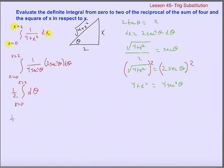We have one half times the definite integral from x equals 0 to x equals 2. Everything has been cancelled or taken out except for d-theta. The integral of d-theta is just theta, evaluated from x equals 0 to x equals 2. But I still can't plug in 0 and 2 because those are values for x, not for theta.